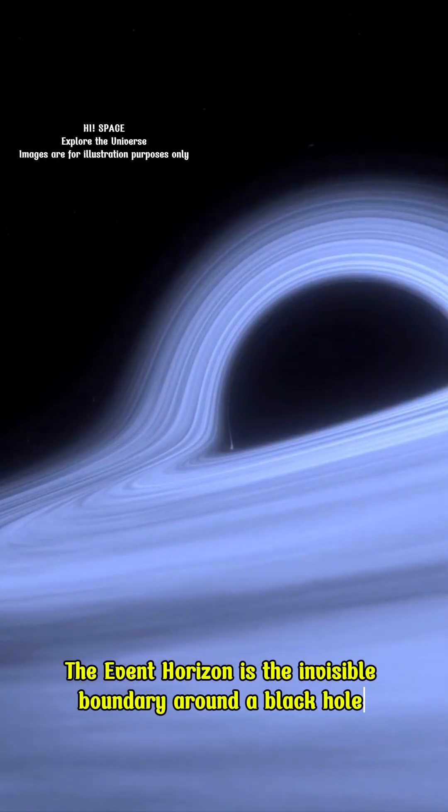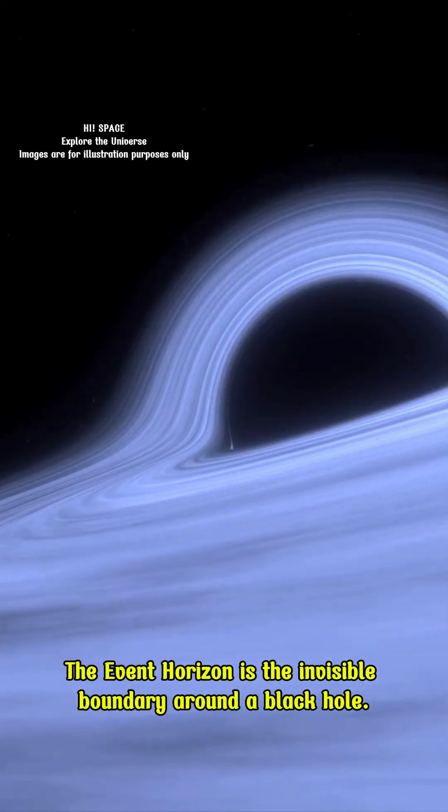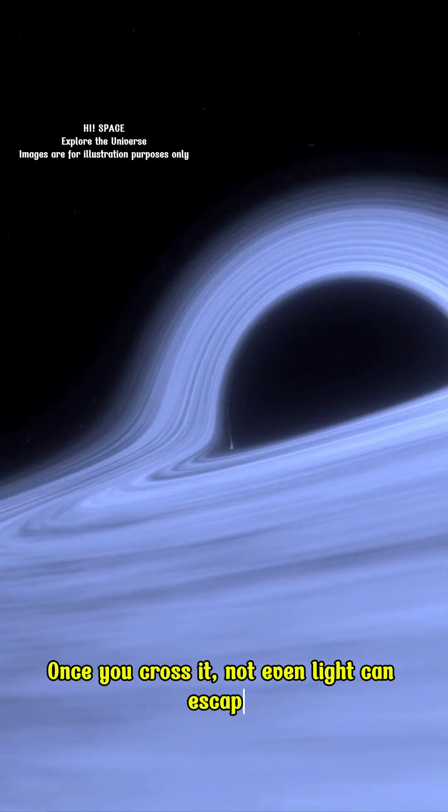The event horizon is the invisible boundary around a black hole. Once you cross it, not even light can escape.